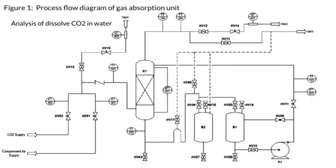Analysis of dissolved carbon dioxide in water: Water used as a solvent for the absorption process should be deionized, because the presence of dissolved salts could affect the analysis method. To perform the analysis, obtain a sample and prepare 100 ml of it. Add 3 to 5 drops of phenolphthalein indicator to the sample.